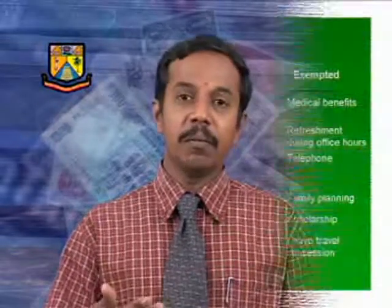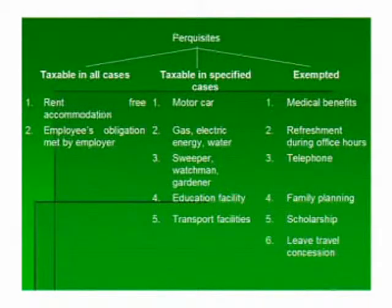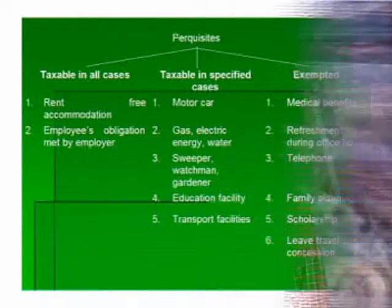Then there are some other perquisites which are not taxable in the hands of any assessee — these are fully exempted perquisites. For example, medical benefits, refreshment during office hours, family planning, scholarship, and leave travel concession — these are all exempted perquisites and not taxable in the hands of the assessee.